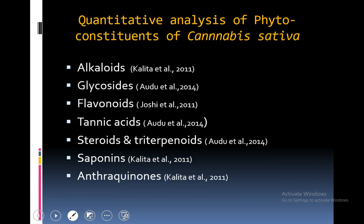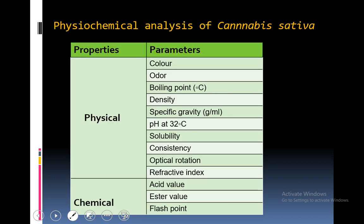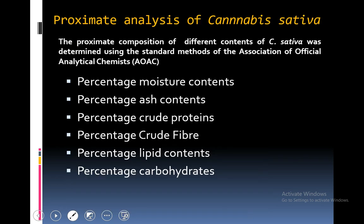Quantitative analysis of phytochemical constituents including alkaloids, glycosides, flavonoids, tannic acids, steroids, triterpenoids, saponins and anthraquinones was also performed. Both qualitative and quantitative analysis of these groups was performed. Physicochemical analysis involved physical properties like color, odor, boiling point, density, specific gravity, pH, solubility, consistency, optical rotation, refractive index, and chemical analysis including acid value and flash point. Proximate analysis was done by analyzing percentage moisture, ash, proteins, fiber, lipid contents and carbohydrate contents.